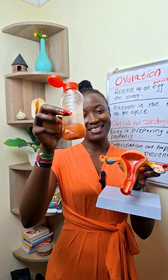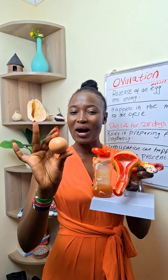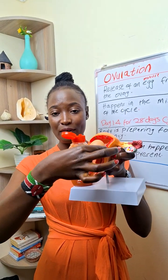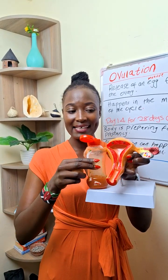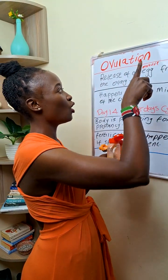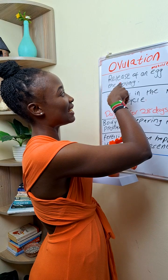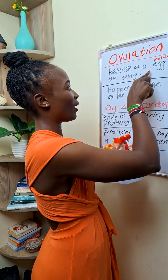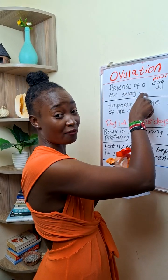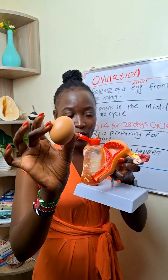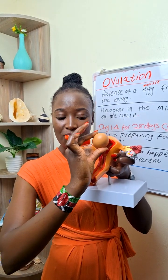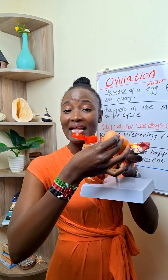Let's look at the difference between ovulation and menstruation. Ovulation is the release of a mature egg from the ovary. This is your egg, these are the ovaries. So that is the release of a mature egg from the ovary.